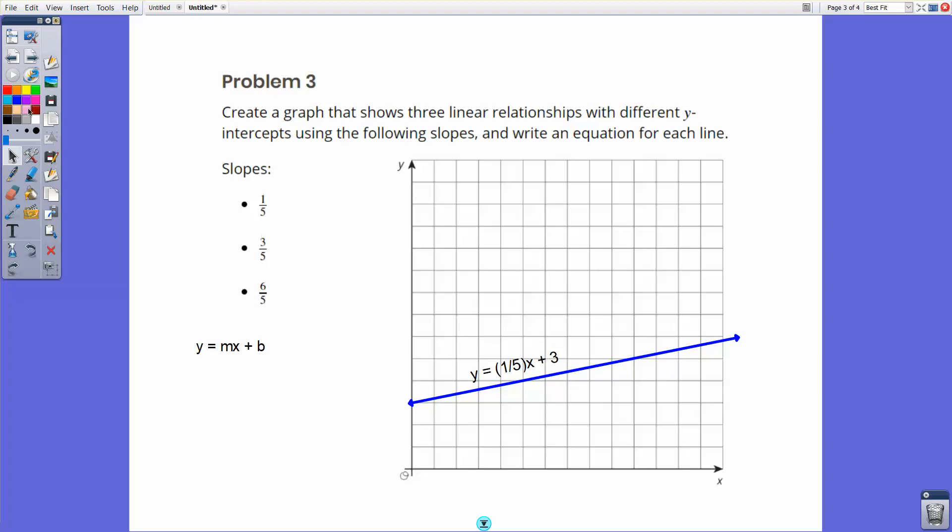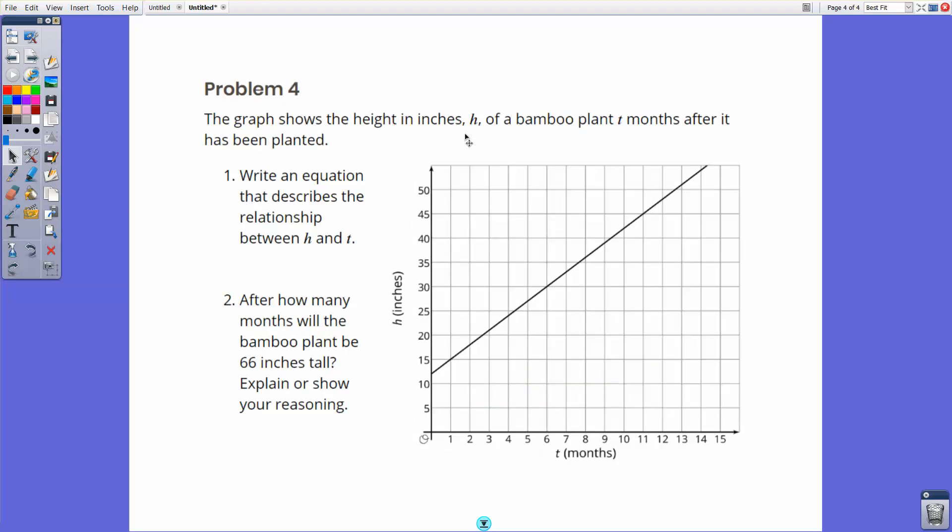So the last problem in the set, problem four, is a word problem with the graph. The graph here shows the height in inches H of a bamboo plant T months after it has been planted. Bamboo grows really, really quickly, and I know this because in my backyard, the neighbors behind us planted this huge batch of bamboo and it towers over the entire, their house, hides their house and towers over everything that we can see in the back. It's kind of ridiculous. But anyway, I digress. The graph shows the height in inches of bamboo plant T months after planted. So what we're going to do is we're going to write an equation. Write an equation that describes the relationship between H and T. So that's super easy. Where's the y-intercept? So the y-intercept here looks like it's about 12 and the slope of this line, what is that slope?